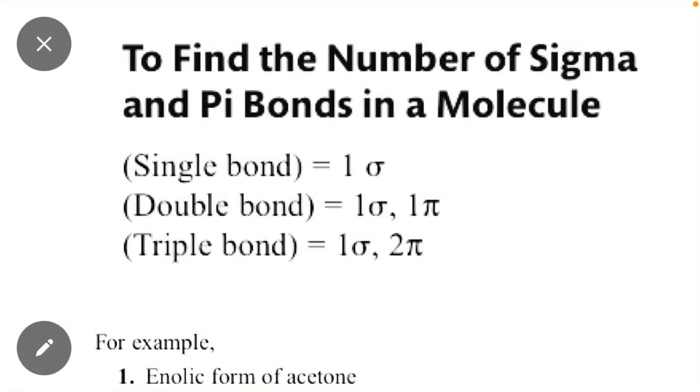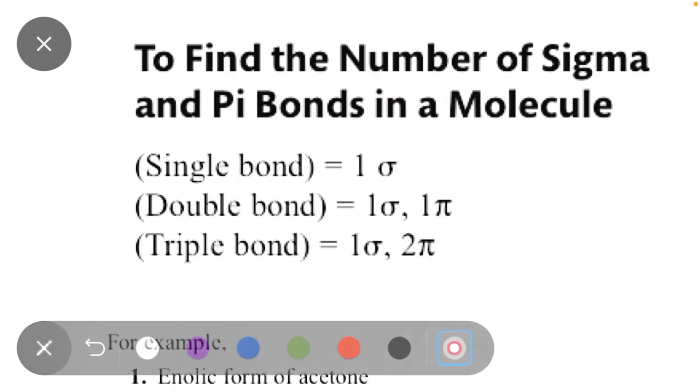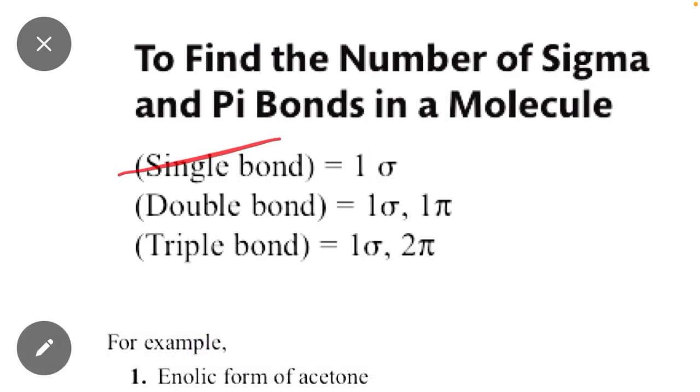In this video we will study how to calculate number of sigma bonds as well as pi bonds in any molecules. Keep in mind single bonds always one sigma bond, double bonds contain one sigma and one pi bond. Similarly triple bonds contain one sigma and two pi bonds.